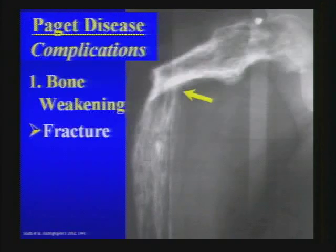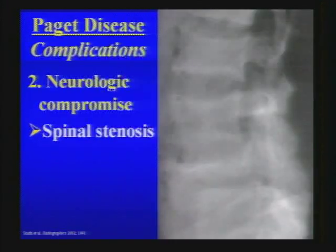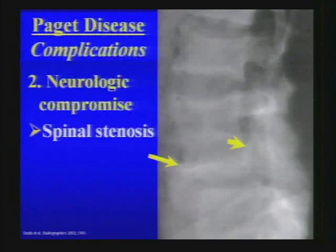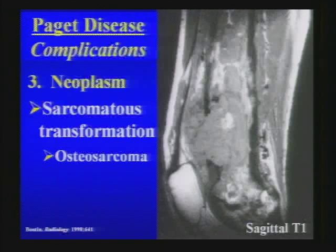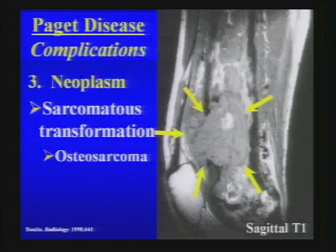Look for fractures with Paget's disease. Neurologic compromise is another important complication — spinal stenosis may occur due to osseous expansion or, in some cases, a pathologic fracture with retropulsion. The most dreaded complication is sarcomatous transformation, in this case into an osteosarcoma, evidenced by marrow replacement, cortical breakthrough, and an adjacent soft tissue mass.